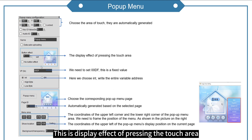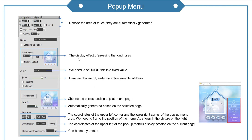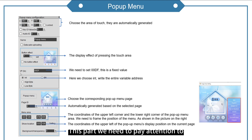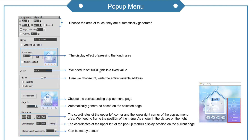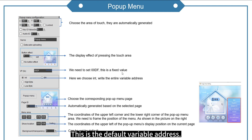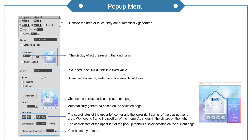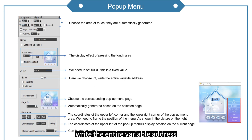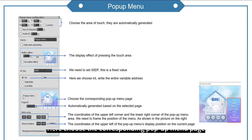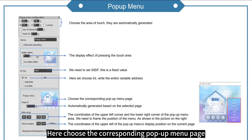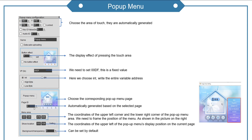This is the display effect of pressing the touch area. Here I set an effect; we could also set no effect. This part we need to pay attention to — we must use this value. This is the default variable address. Here we choose 'in' and write the entire variable address. Here, choose the corresponding pop-up menu page. The next page ID is automatically generated based on the selected page.